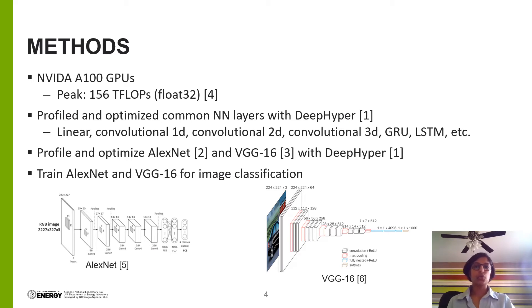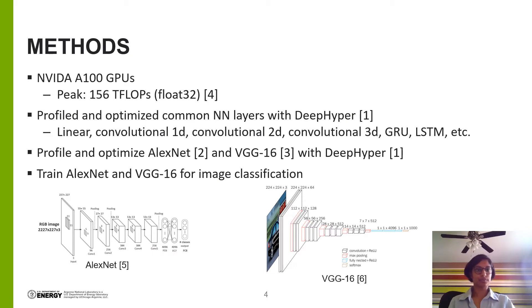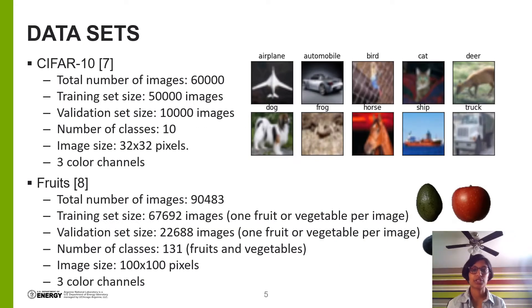Next, I looked at two well-known image classification neural networks called AlexNet and VGG16, and found the ideal construction of the layers within each network to reach peak FLOPs, in much the same way I did for individual layers. We then trained the original and optimized models of AlexNet and VGG16 on several image datasets — specifically the CIFAR-10 dataset and the Fruits dataset — and observed the differences.